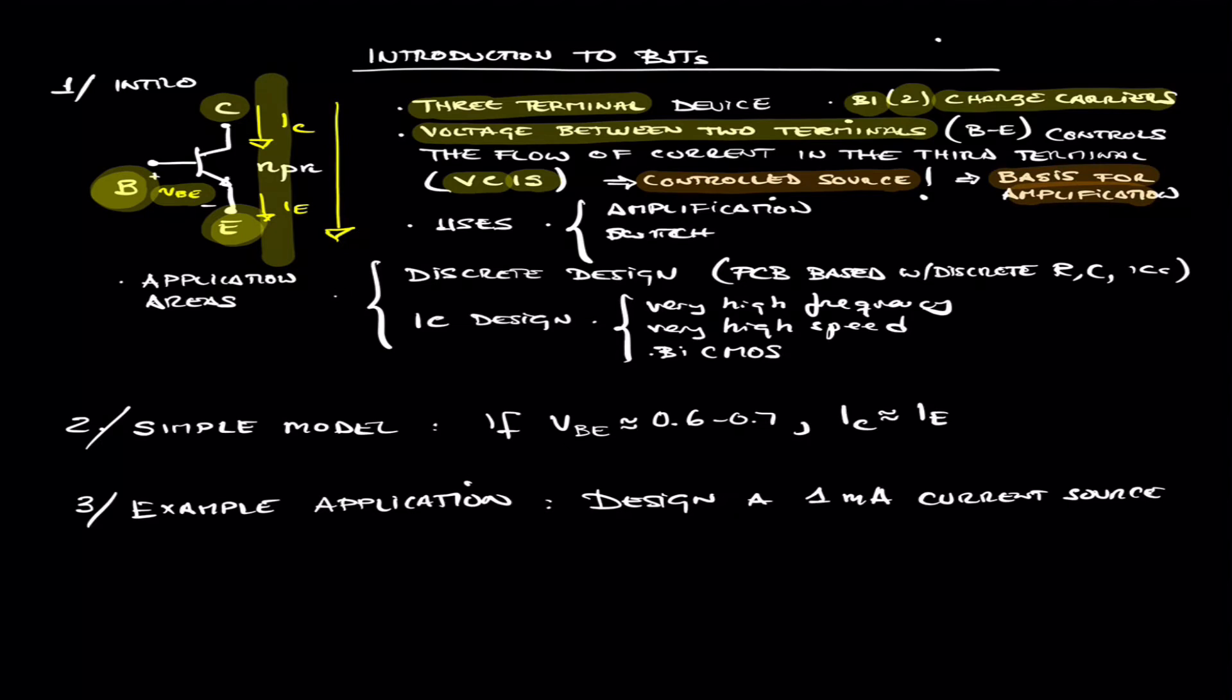Because if we are able to have a small voltage here control a current, you put a resistor, and current times resistance is going to give you a voltage there. So we are going to see applications where this single device, with just one transistor, we are able to amplify signals.